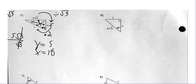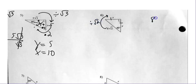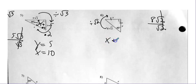Number six — back to a 45-45-90. X and Y are the same. I'm going from the hypotenuse, the longest side, to a leg, so I must be dividing by radical two. That's my magical radical. So eight radical two divided by radical two means X and Y are both eight.